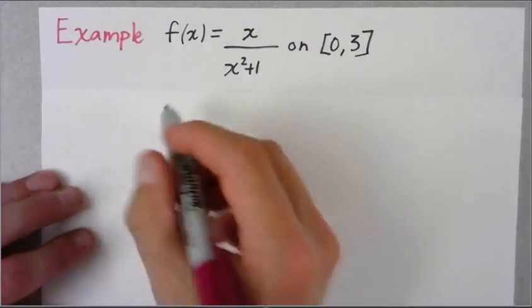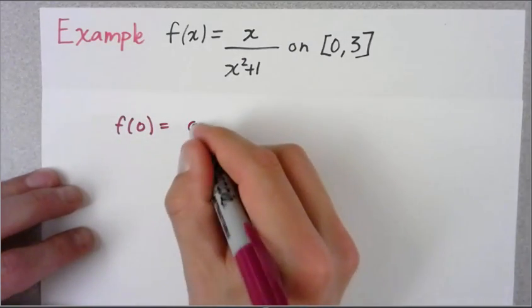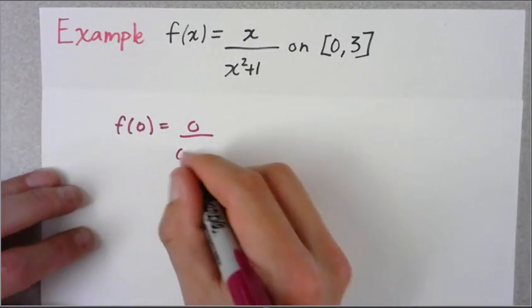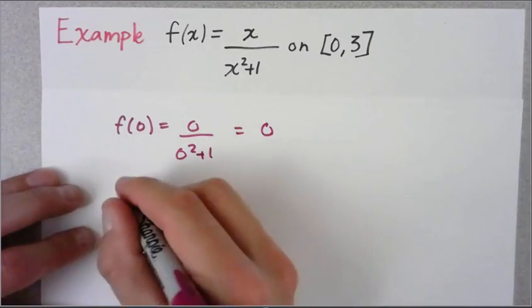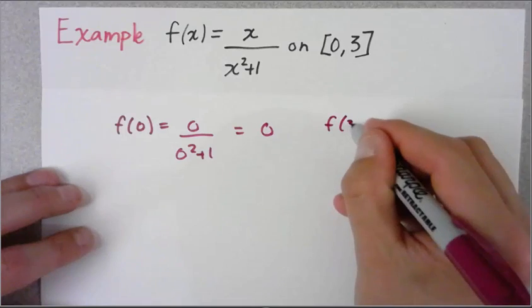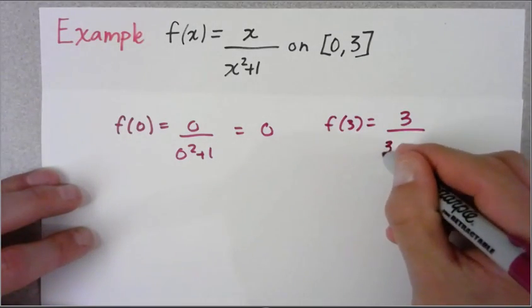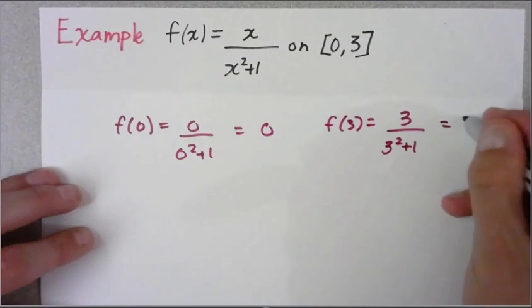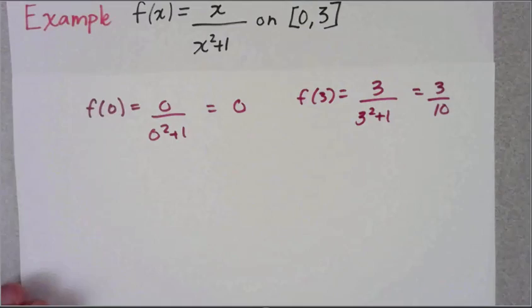I'm going to evaluate f(0) first - zero over anything is zero, so I get zero for this. Then when I plug in 3, I get 3/(3² + 1), so 3/10. I've got my endpoint values, now I need my critical numbers.